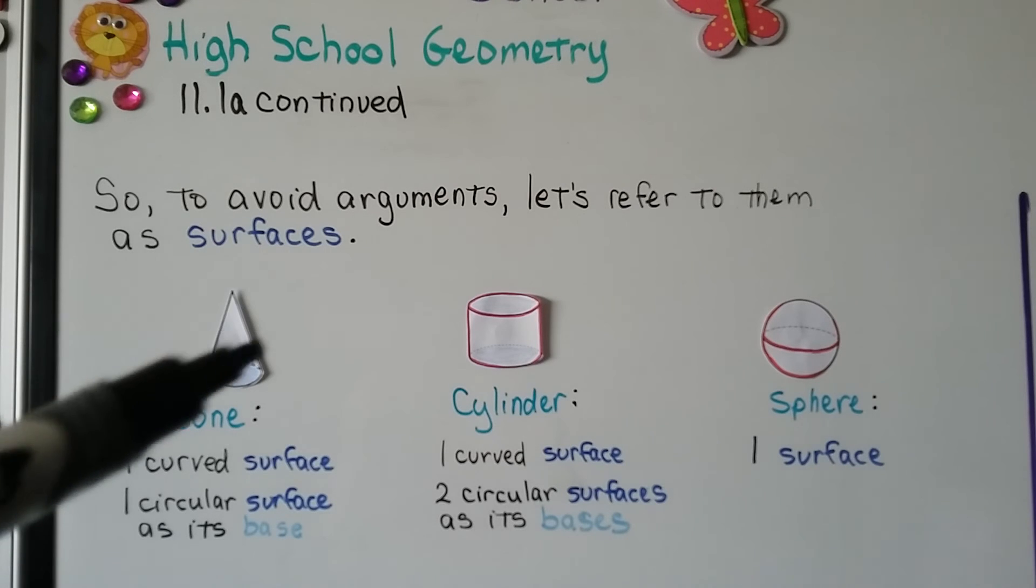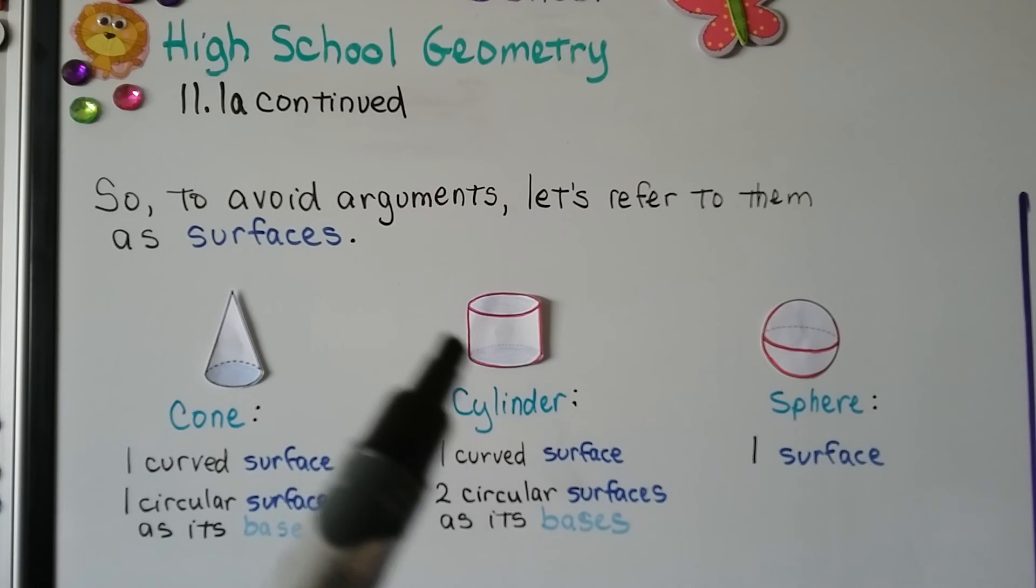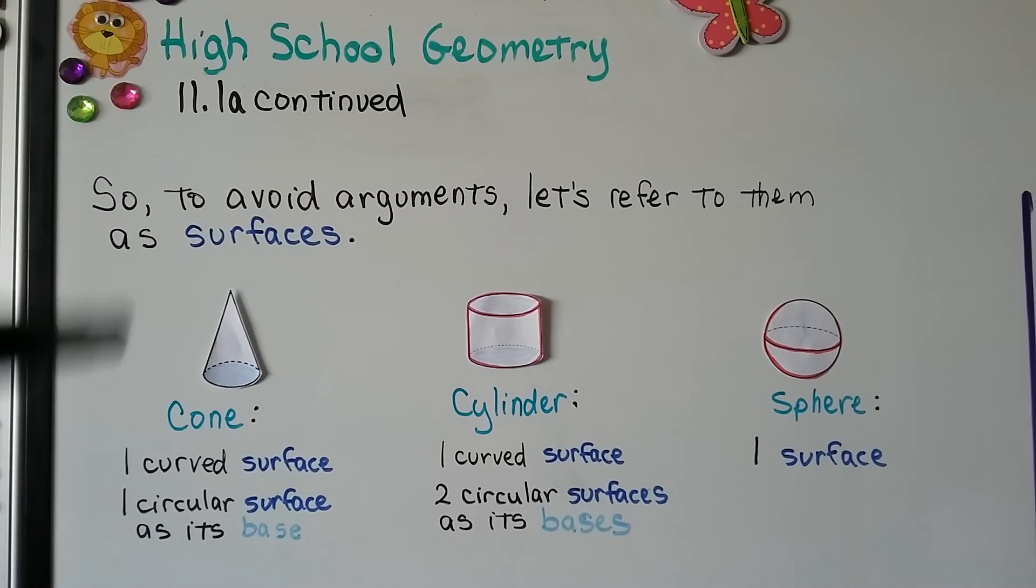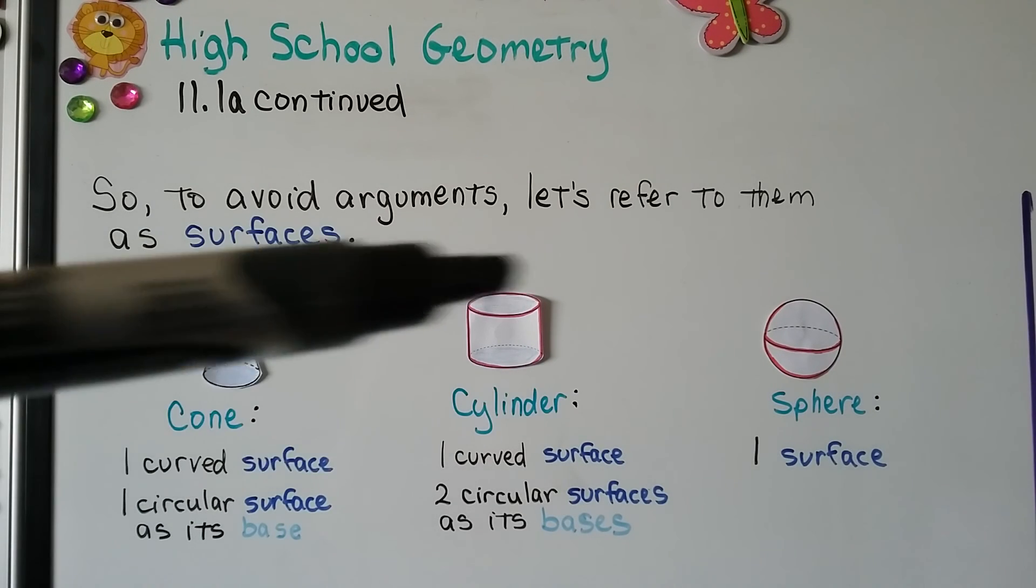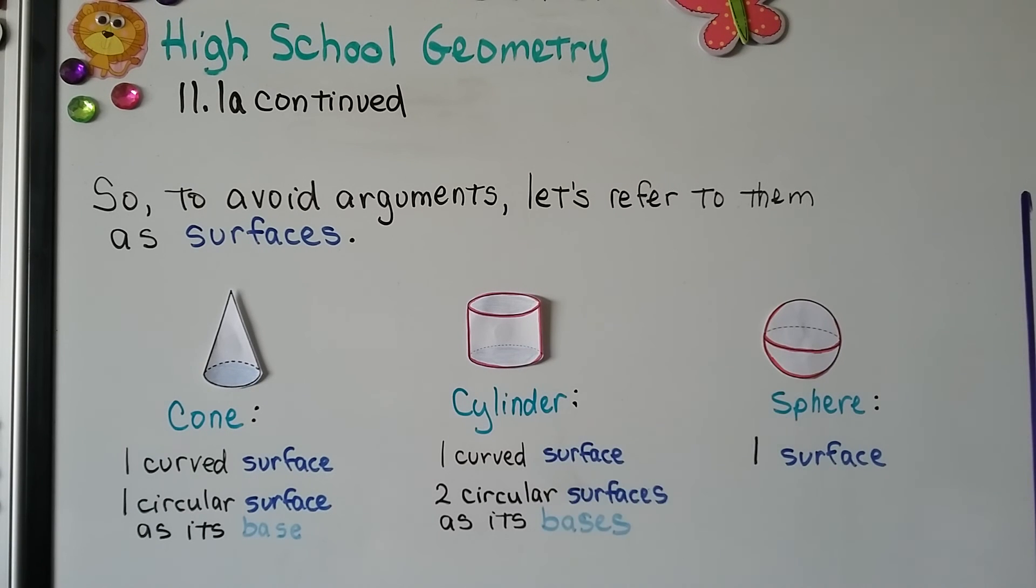So, a cone has one curved surface and one circular surface as its base. A cylinder has one curved surface going around, and it's got two circular surfaces, which are its bases. And a sphere just has one surface.